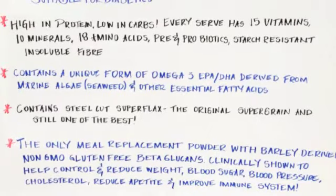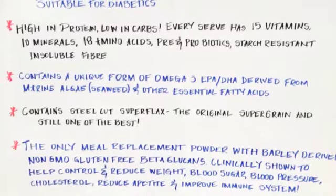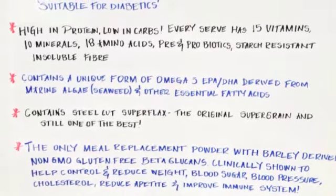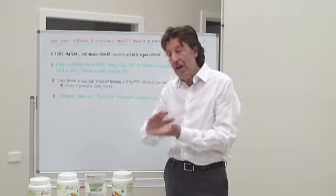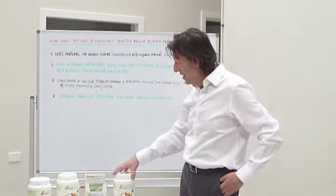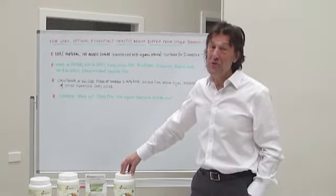Unique form of omega-3 as I said and steel-cut superflax, the original supergrain, the original superfood and steel-cut because it doesn't oxidize, it's chopped rather than ground. So these are the ingredients in our products. You won't get another product on the market as natural, plus it really tastes great.